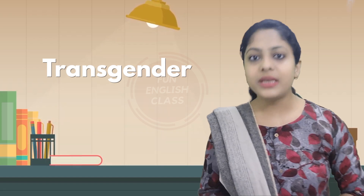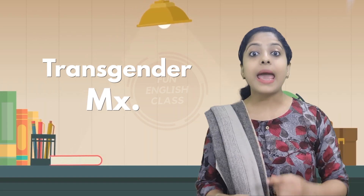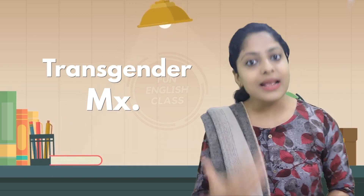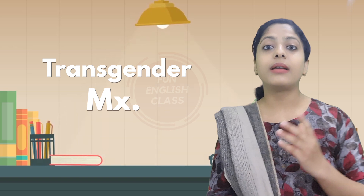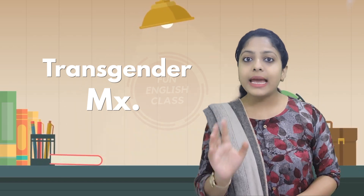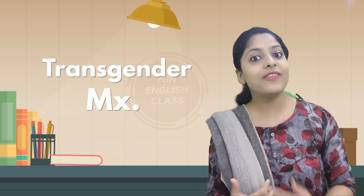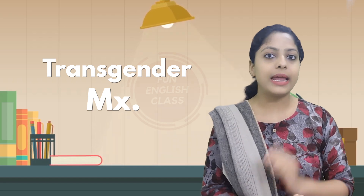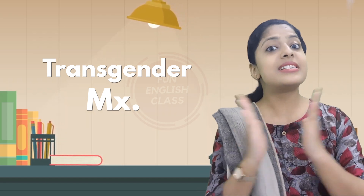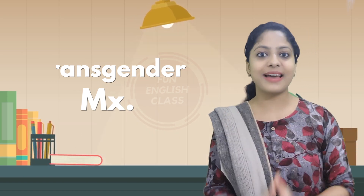Now comes the fourth title. What do we use for transgender? The title for transgender is Mx. Mx is pronounced as 'Mix.' We use Mx whenever we are not sure of the gender — when we are not sure if the person in front of us is male or female, or when they don't want to disclose their gender. In that case, we will always use Mx, pronounced 'Mix.'